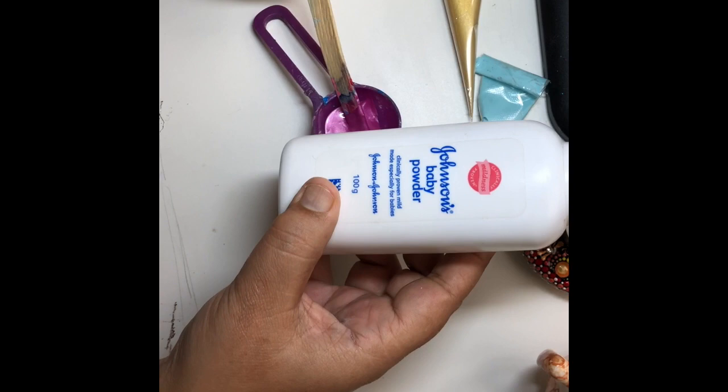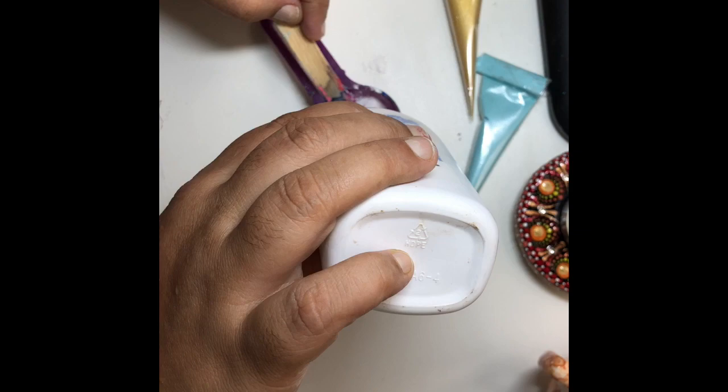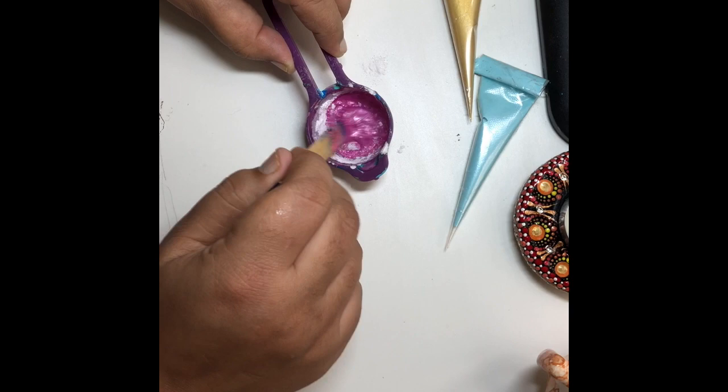You can use any talcum powder that you have at home. This baby powder is very useful for mixing it in the acrylic paints. Now this color is also ready to be filled in the cones.